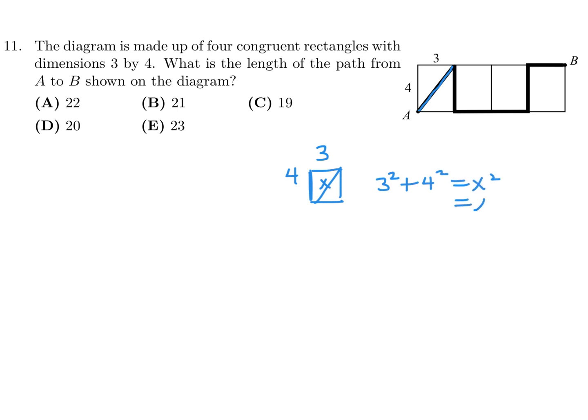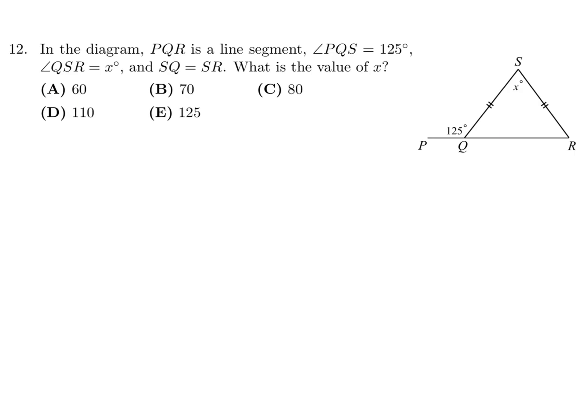Solving for x gives x equals five. The rest of the dimensions come from the fact that everything is four by three. Then you just count: four plus four plus three plus three, four and three. When you do that counting you get 22, and therefore number 11 is eight.